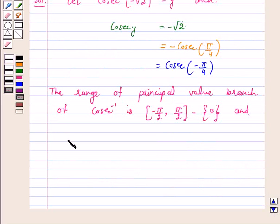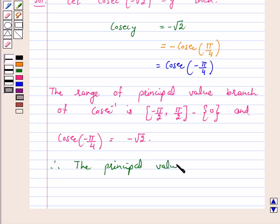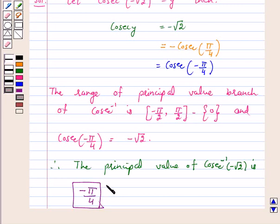And cosecant of minus pi by 4 equals minus root 2. Therefore, the principal value of cosecant inverse minus root 2 is minus pi by 4. This is the answer, that is minus pi by 4 is the principal value of cosecant inverse minus root 2.